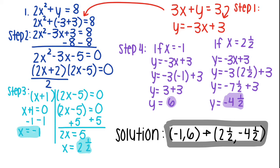You're going to start with step 1, which is in the color red. You make the equation equal to y, which is y equals negative 3x plus 3. Then you go to the first equation and plug it in, getting 2x squared plus negative 3x plus 3 equals 8.